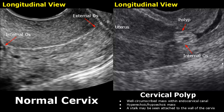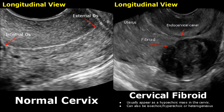A fibroid can also be found in the cervix. It will appear hypoechoic mostly, but it can also appear isoechoic or hyperechoic and even heterogeneous.